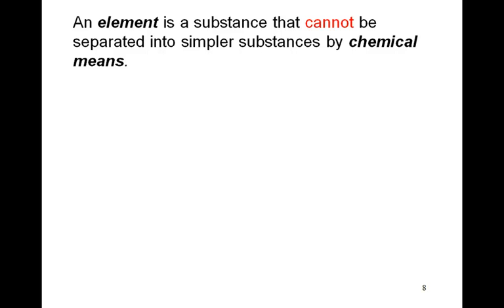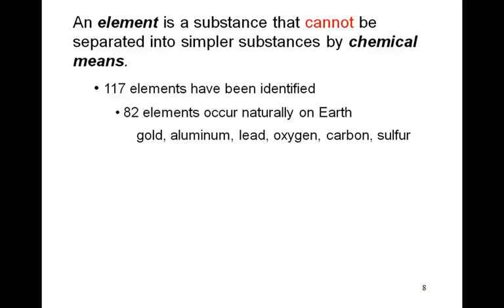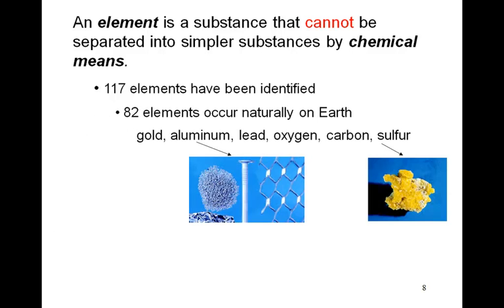An element is a type of substance. Remember, substance is pure. That cannot be separated by physical means. Instead, it has to be separated by chemical means. The difference between separation by physical means versus chemical means is that in chemical means you have to change the identity of the substance. Physical means you do not change the identity of the substance. These elements are pure substances that cannot be broken down by normal means. All of your elements are pure substances.